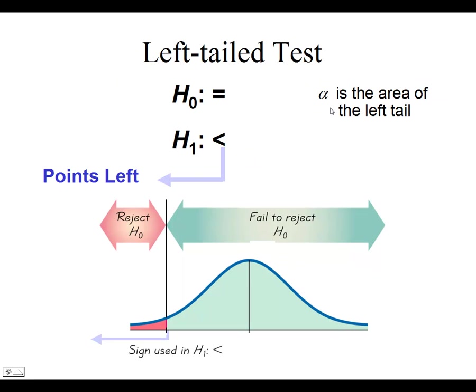In the left-tailed test, the entire level of alpha is left in the left tail, the smaller tail. Whereas in the two-tail we might cut it off right here, here we're enlarging our critical region, putting the entire level of alpha and the entire significance level on the left side.